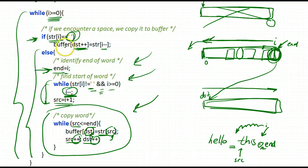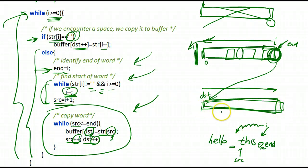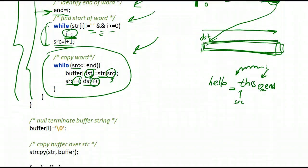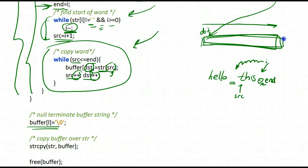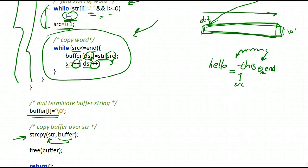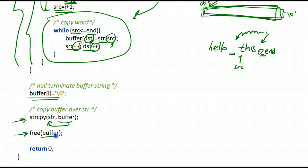We repeat this — when we hit a space we copy it directly, otherwise we detect a word and copy it — until we reach the beginning of the string. At that point we've copied the entire reversed string into the buffer. We then null-terminate the buffer, copy it onto the original string, deallocate the buffer memory, and return zero for success. This is the first solution, which isn't optimal — we'll look at a better solution in the next video.